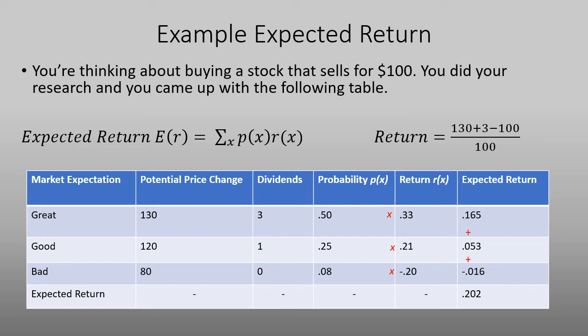You then multiply the 0.33 times by the probability that you're usually given. And in this case, we found it to be 0.5. And if you do that, you then get an expected return for great market expectation of 0.165.